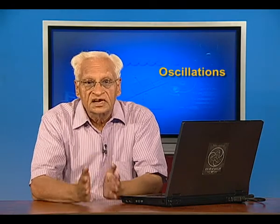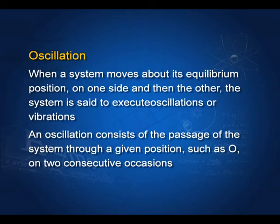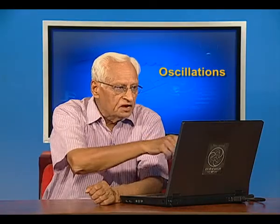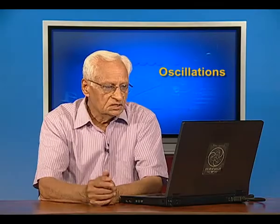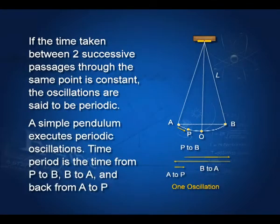A single oscillation consists of the passage of the system through a given position such as O. The system goes up, goes down, and goes through O again — this constitutes one oscillation. If the time taken for each oscillation is constant, then the oscillations are said to be periodic. A simple pendulum executes periodic oscillations.